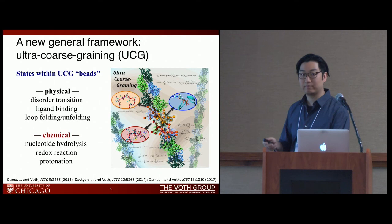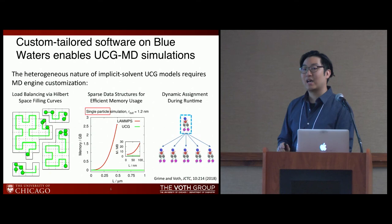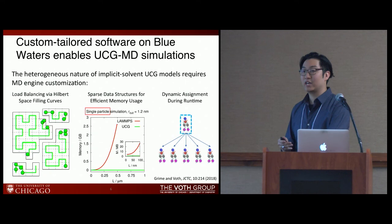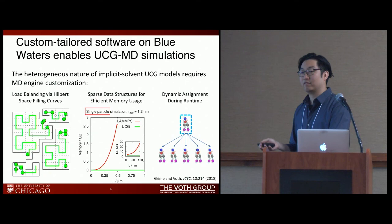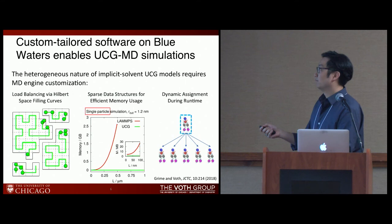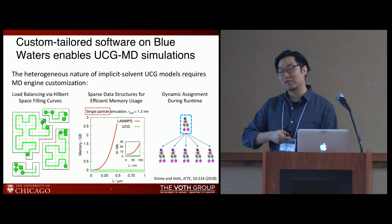All of that is to say we have this methodology. The reason we use Blue Waters is that coarse-grained models introduce technical challenges conventional MD doesn't face. Since we use implicit-solvent coarse-grained models, we have a very sparse, heterogeneous system. I'll briefly talk about this code — it's the work of my previous co-worker John Grime, who has presented on it before, so I'll go through it quickly.